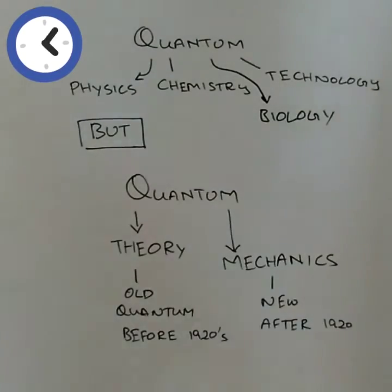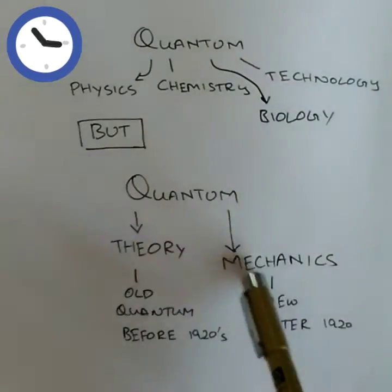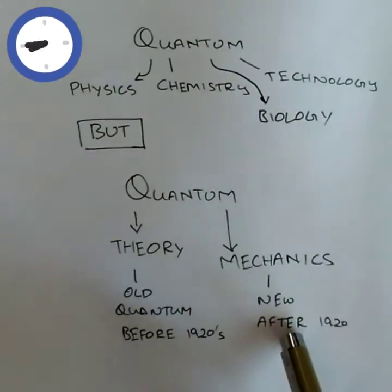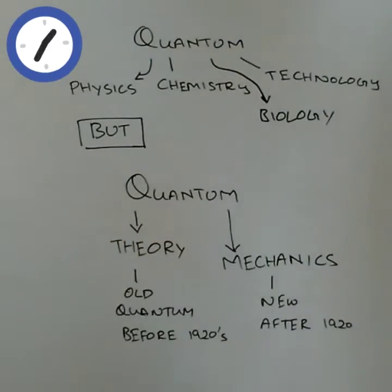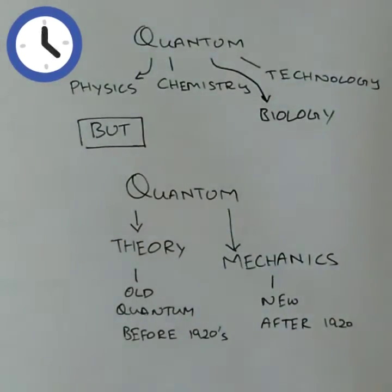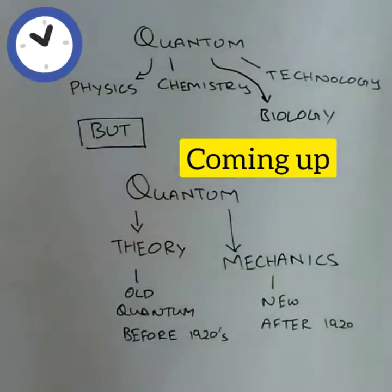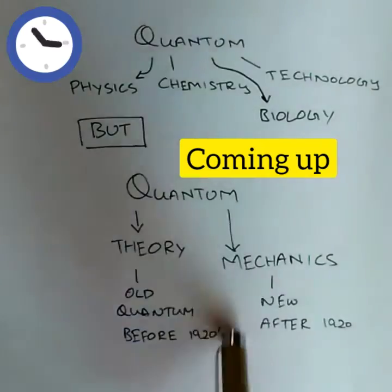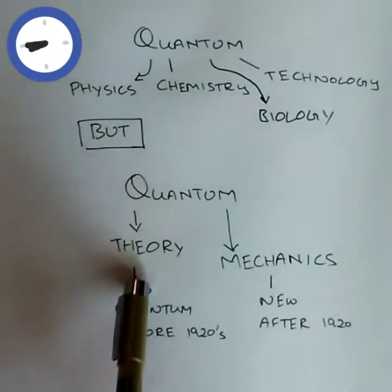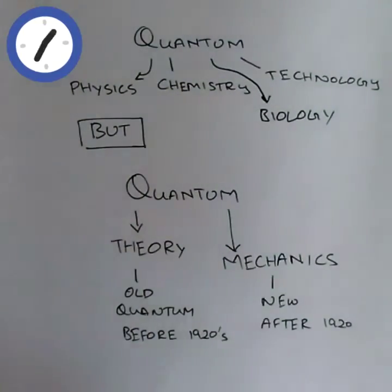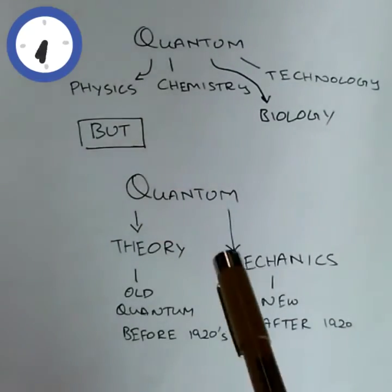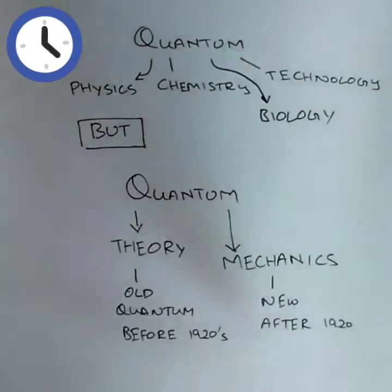The uncertainty principle, quantum entanglement—everything of that comes under quantum mechanics. And the theory of the shells, you may know that atoms have electrons which orbit around. In later videos I will explain it, but that part comes in the old quantum theory, and the new, more savvy things come in quantum mechanics.